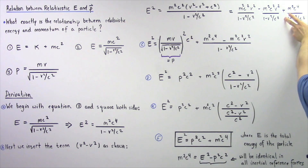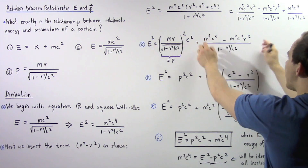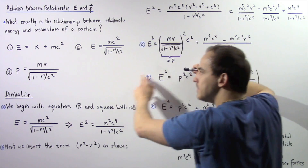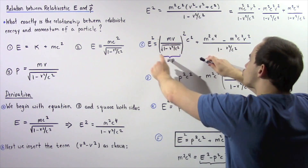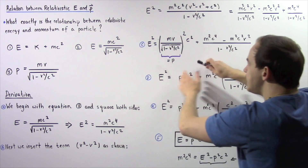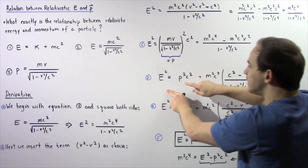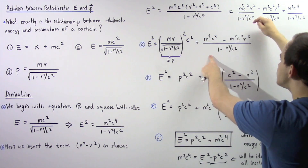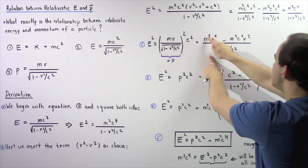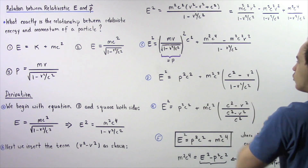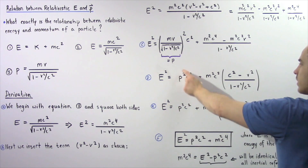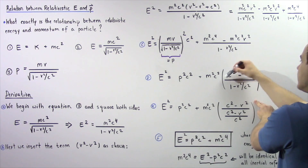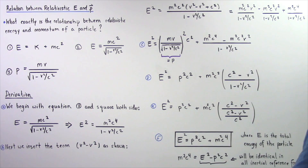Let's bring the last term forward and combine terms with the common denominator. Notice this quantity from equation three is simply p, the relativistic momentum. So we replace that inner quantity with p. We have p squared multiplied by c squared, and we bring out the common term m squared c squared, giving: E squared equals p squared c squared plus m squared c squared multiplied by c squared minus v squared, all divided by 1 minus v squared divided by c squared.